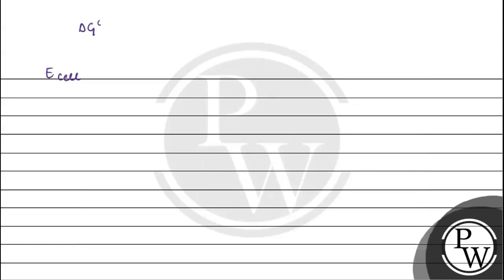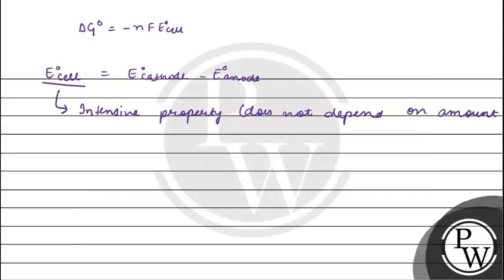If we take ΔG° = -nFE°cell, that is standard electrode potential, E°cell = E°cathode - E°anode, which means reduction potential of cathode minus anode. So we can see that the EMF of the cell does not depend on number of moles. That's why we can say that it is an intensive property, because it does not depend on amount of matter.